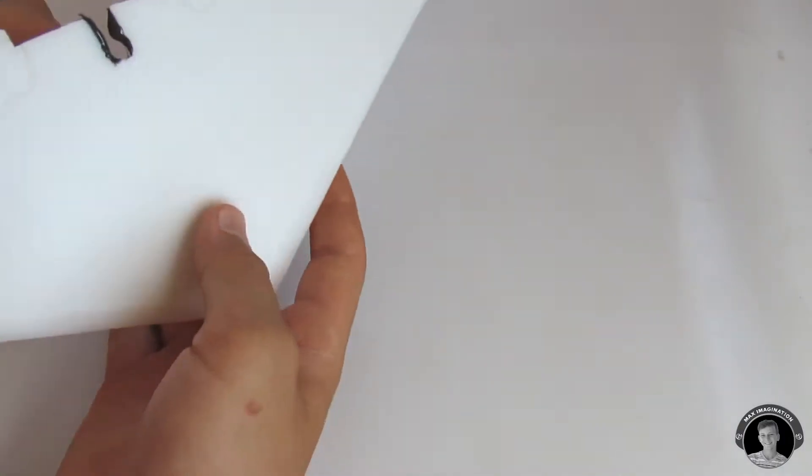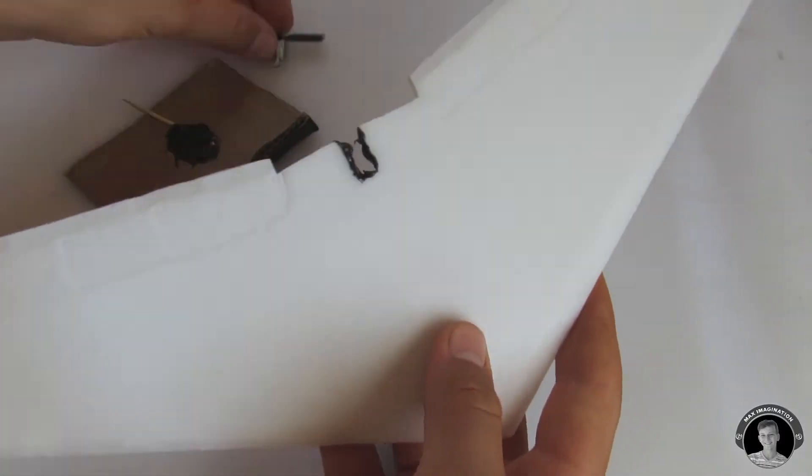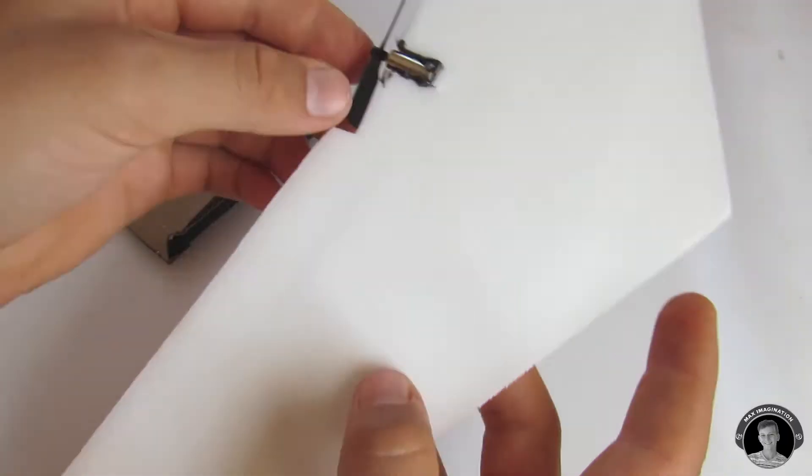The reason why I'm using something like epoxy instead of hot glue to secure the motor in place is because the motor gets hot enough to melt hot glue which would disorientate it and you don't want that.